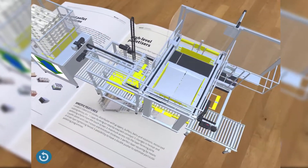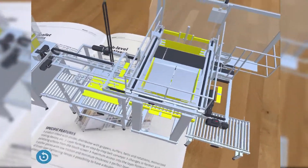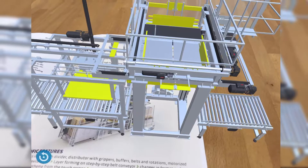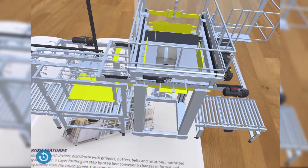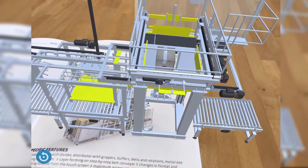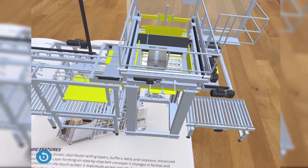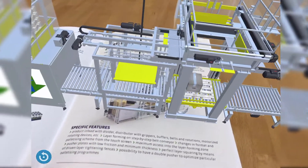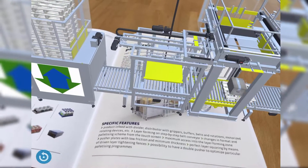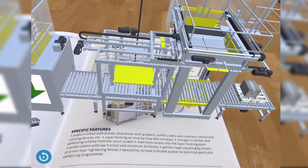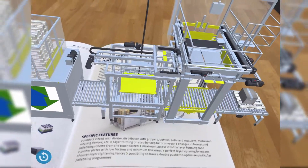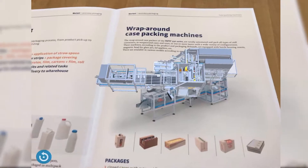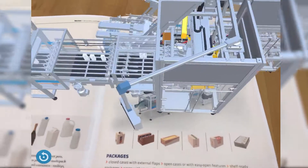In this video we will show you how you can add extensive 3D models and animations to your product catalog using augmented reality. All you need are your CAD models and images from your catalog. Our apps then connect the images with the models.